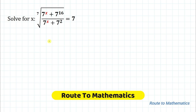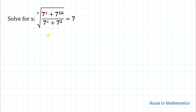Hello everyone, welcome to Root to Mathematics. In this video we are going to solve an interesting radical question. The given question is: solve for x, where we have the 7th root of 7 to the power x plus 7 to the power 16, divided by 7 to the power x plus 7 squared, equals 7.